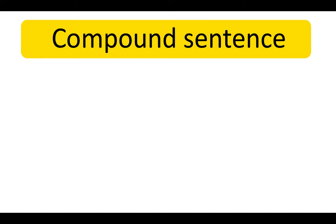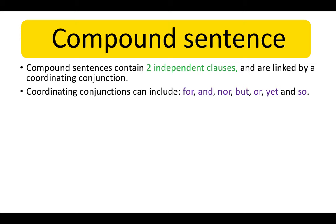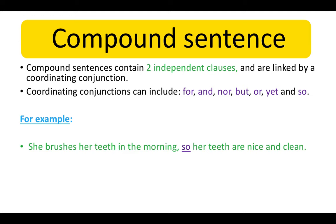Compound sentences contain two independent clauses and are linked by a coordinating conjunction. Coordinating conjunctions can include: for, and, nor, but, or, yet, and so. For example: She brushes her teeth in the morning, so her teeth are nice and clean.